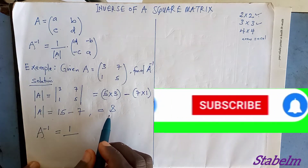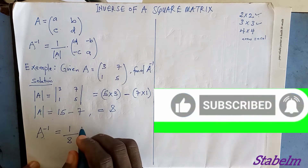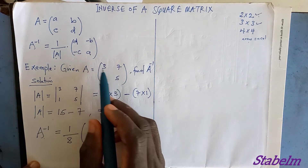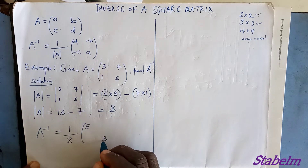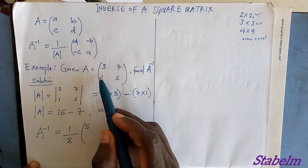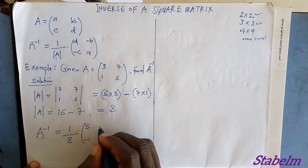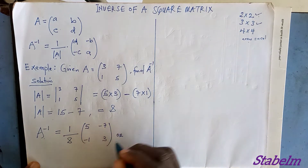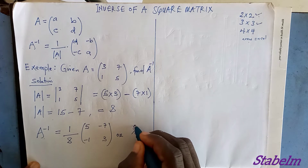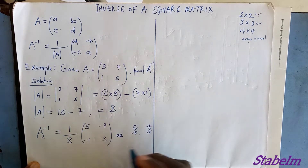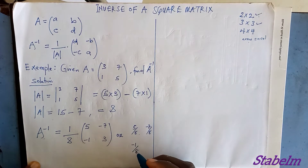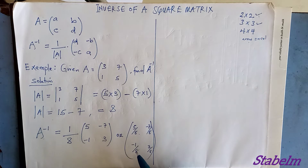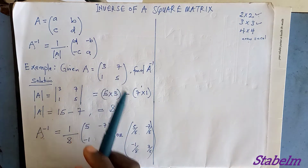Now following the formula, A inverse equals 1 over the determinant of A, which is 8. We interchange the diagonal elements: 5 and 3 swap positions. Then the off-diagonal elements change sign: minus 1 and minus 7. So A inverse equals (1/8)[5, -7; -1, 3], which we can write as [5/8, -7/8; -1/8, 3/8].